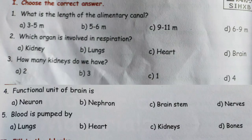Question number 4: The functional unit of the brain is — A: neuron, B: nephron, C: brain stem, D: nervous. The functional unit of the brain is — very good — neuron. Option A: neuron.